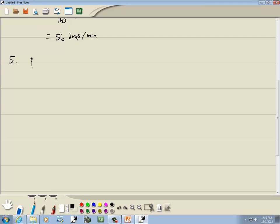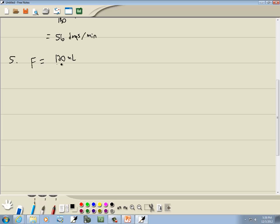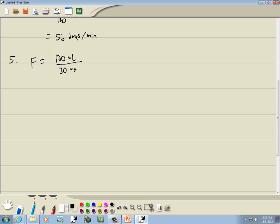Now the flow rate one. It says nurse is asked to infuse 120 milliliters, that's our volume, in 30 minutes. Well, the bottom part needs to be in hours, and 30 minutes is half an hour, so I'll put 0.5 hours down here. That's going to give us 120 divided by 0.5, which is 240 milliliters per hour.